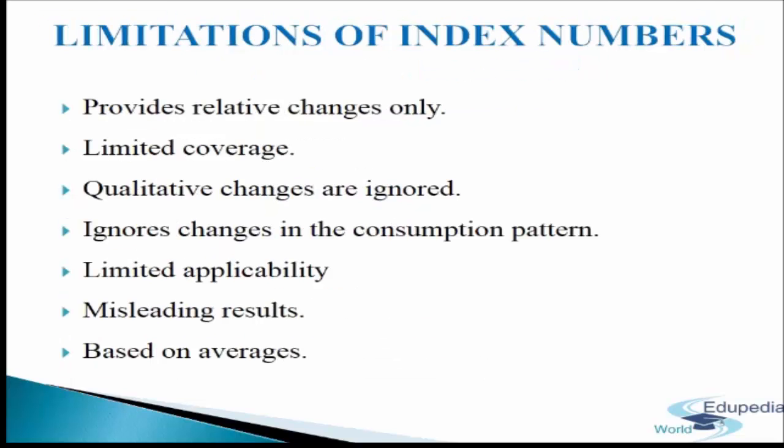Next, we come to limitations of index numbers. In the words of Colborne, in this changing world it is difficult to escape from their theoretical defects, and in future it will not be possible from the theoretical point of view to make use of the best method of constructing the index number. The major limitations include: first, it provides relative changes only — index numbers are only estimates of relative changes in various events and are only approximate indicators. They represent a generalized truth based on an average of all items, and hence do not apply to individual units.